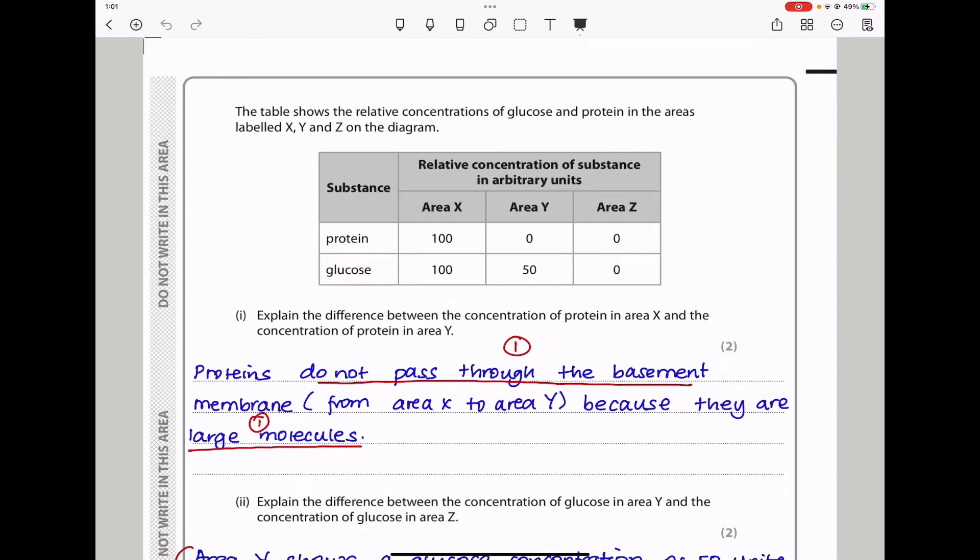In glucose, in area X, we have 100, while in area Y, we have 50, yet in area Z, we have 0. The first question is asking, explain the difference between the concentration of protein in area X and the concentration of protein in area Y. It is because proteins are larger molecules that could not be passed from this region to the other region. I said proteins do not pass through the basement membrane because they are large molecules.